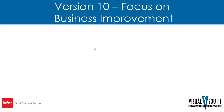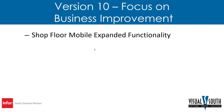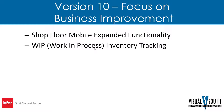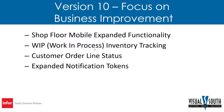Looking at version 10 and the focus on business improvement, the biggest thing is Shop Floor Mobile expanded functionality. Infor put a lot of effort into making this the go-to tool to make it easy for the shop floor to report labor and do material transactions. Enhanced functionality includes WIP transactions, and it also gives supervisors and schedulers much more ability to communicate with shop floor workers about what they should be working on. The work in process inventory tracking is going to be significant.